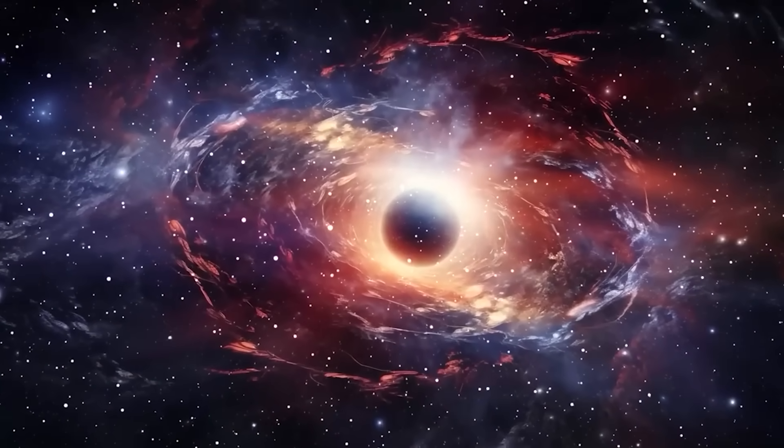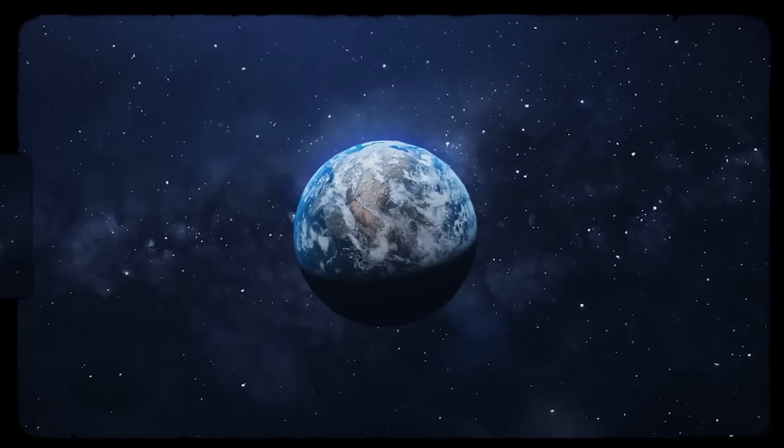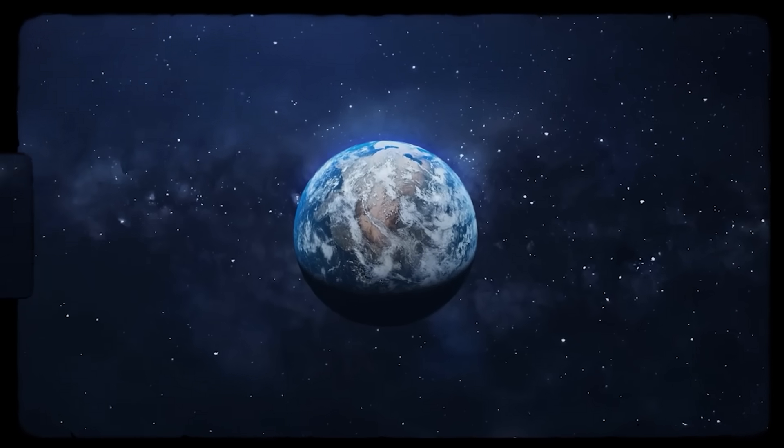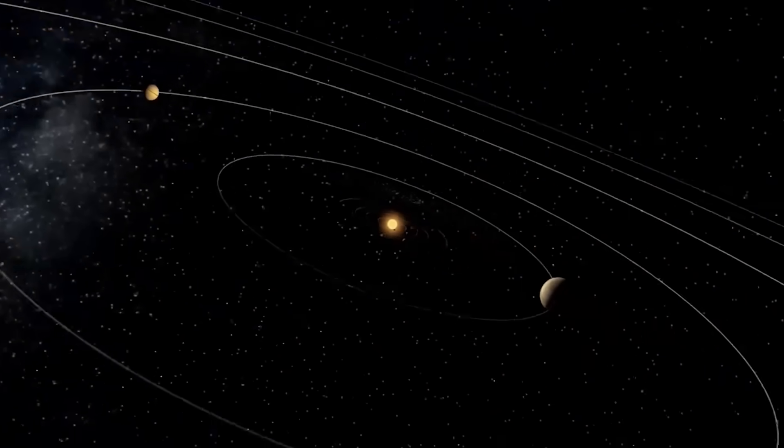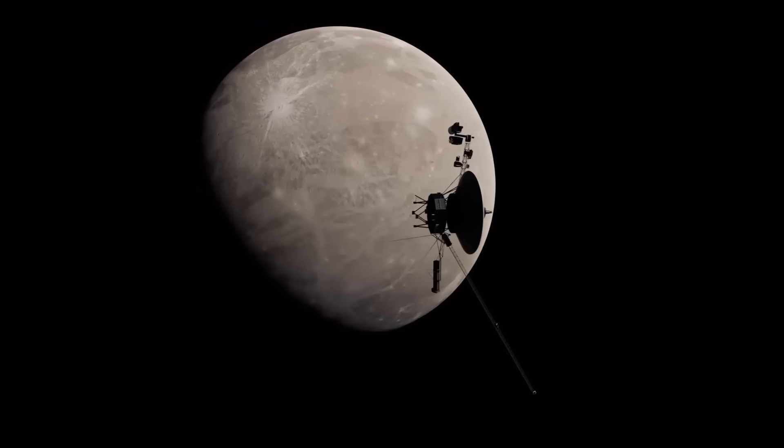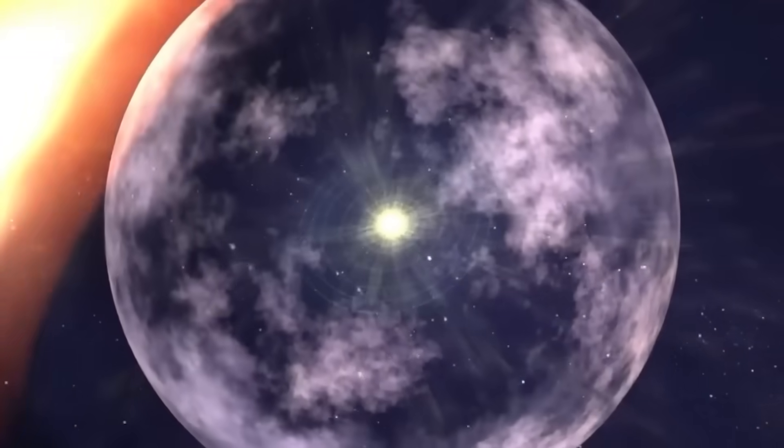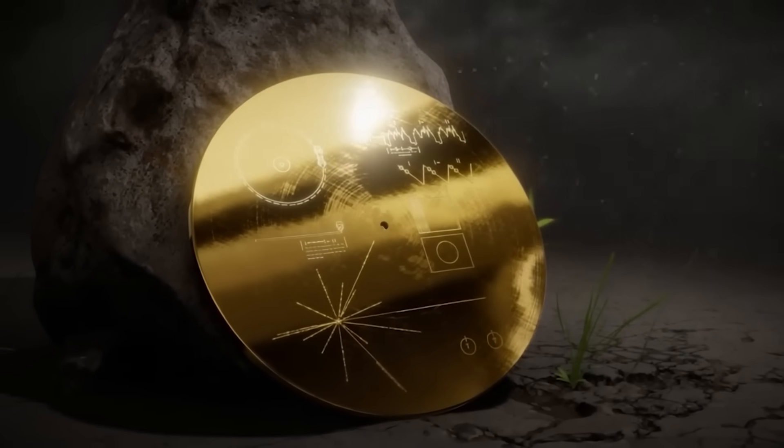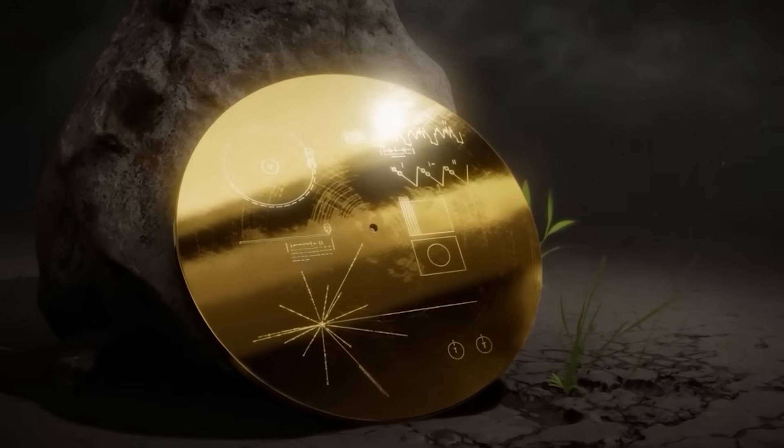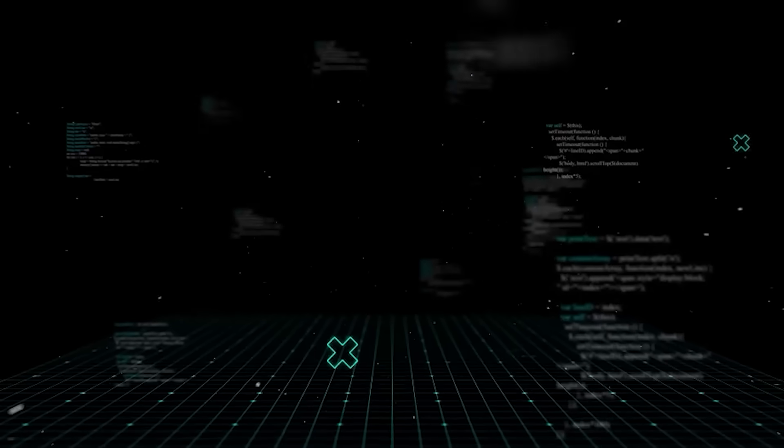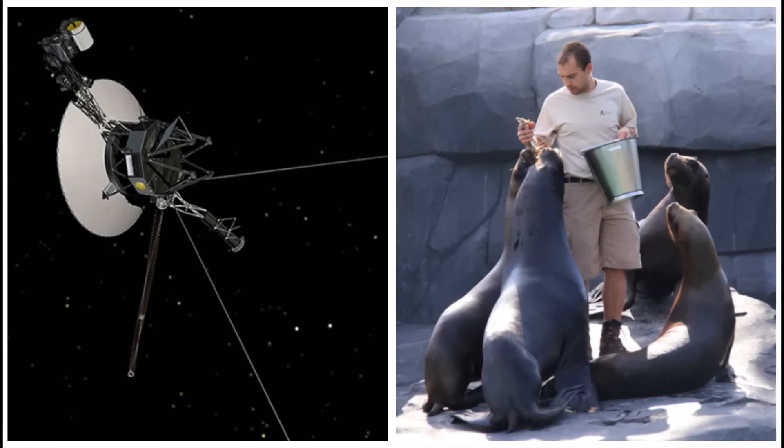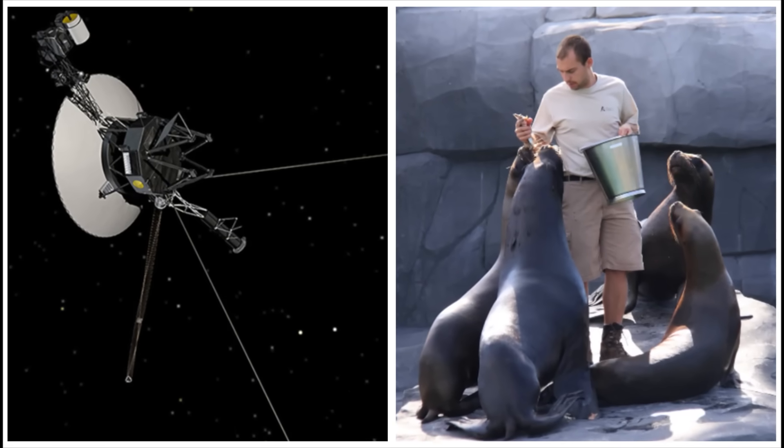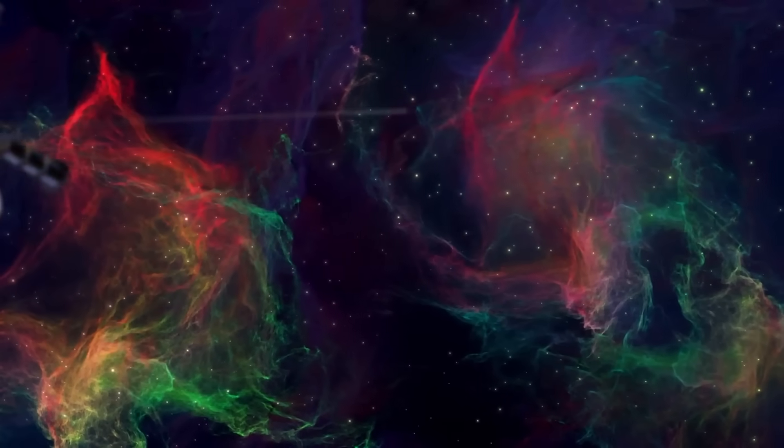Another chilling idea is the zoo hypothesis. This theory suggests that Earth and humanity are part of a cosmic nature preserve. Advanced alien species are watching us from a distance, sworn not to interfere, just like we watch animals in a wildlife park. They're waiting for us to mature. But by sending out the golden record, we've done the equivalent of an animal in the zoo suddenly holding up a sign that says I know you're out there, let me out. This act could shatter their non-interference policy, forcing the zoo keepers to step in. Or even worse, it could alert cosmic poachers that there's something special and vulnerable in this particular cage.